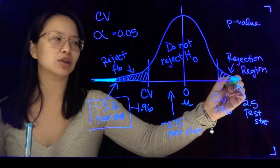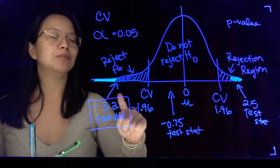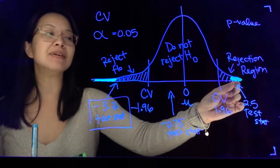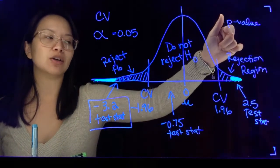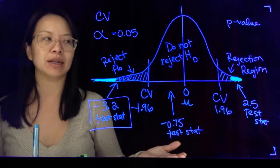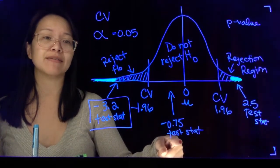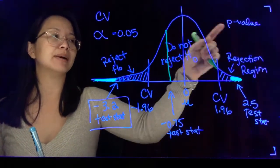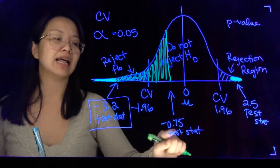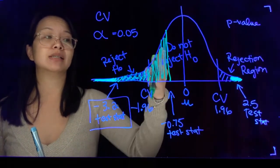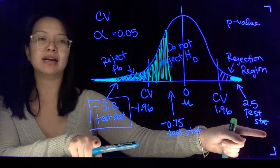For both examples — the test statistic of 2.5 and negative 3.2 — the test statistic and its corresponding p-value fall in the rejection region. Whether you're looking at the location of the test statistic or the p-value as the area representing the chances of it happening, it falls in the rejection region. Whereas when my test statistic was negative 0.75, the area colored in for that p-value is quite large, which is why we don't reject it — the odds of it happening are much higher compared to the other two examples.